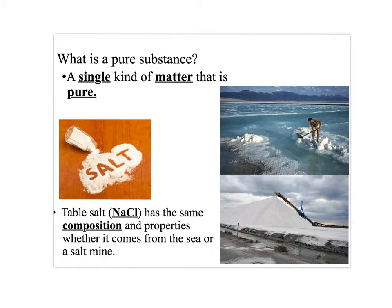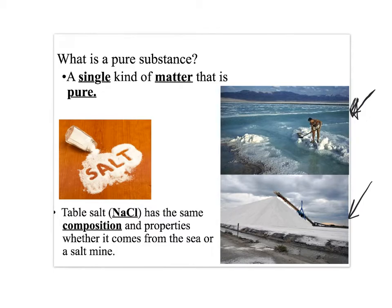What is a pure substance exactly? It's basically just a single kind of matter that's pure — there are no imperfections in it; it's made up of only one type of substance. Table salt, for example, has a chemical formula of NaCl, and it has the same composition and properties whether it comes from the sea or a salt mine. There are different kinds of table salt depending on where it comes from — you can get sea salt or mine salt.